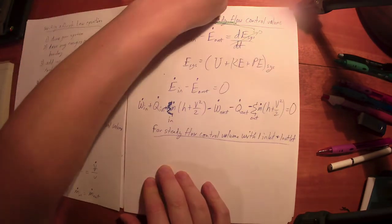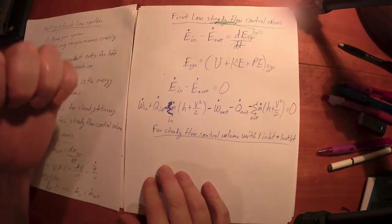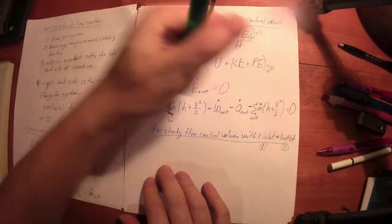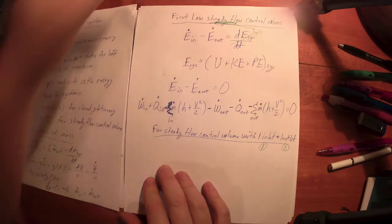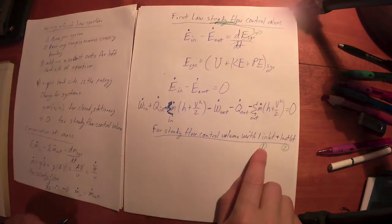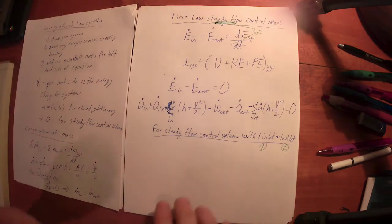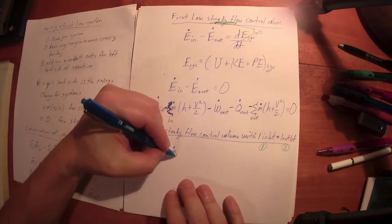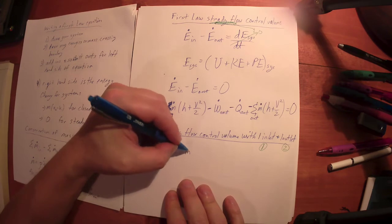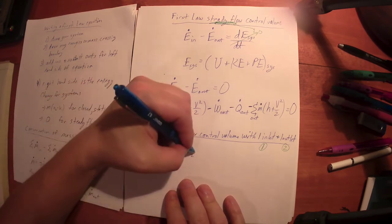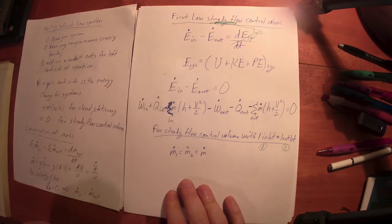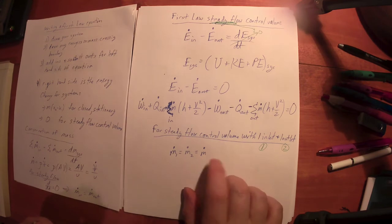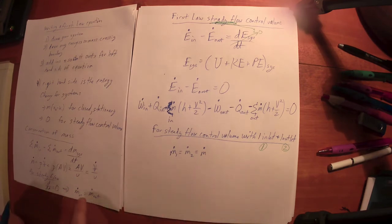A lot of times we will have a device with one inlet we'll call one, one outlet we'll call two. The conservation of mass looks like this: the mass flow rate in is equal to the mass flow rate out, and there's no reason to differentiate them, so conservation of mass just says that's just m dot, and we figure out how to find that back over here.